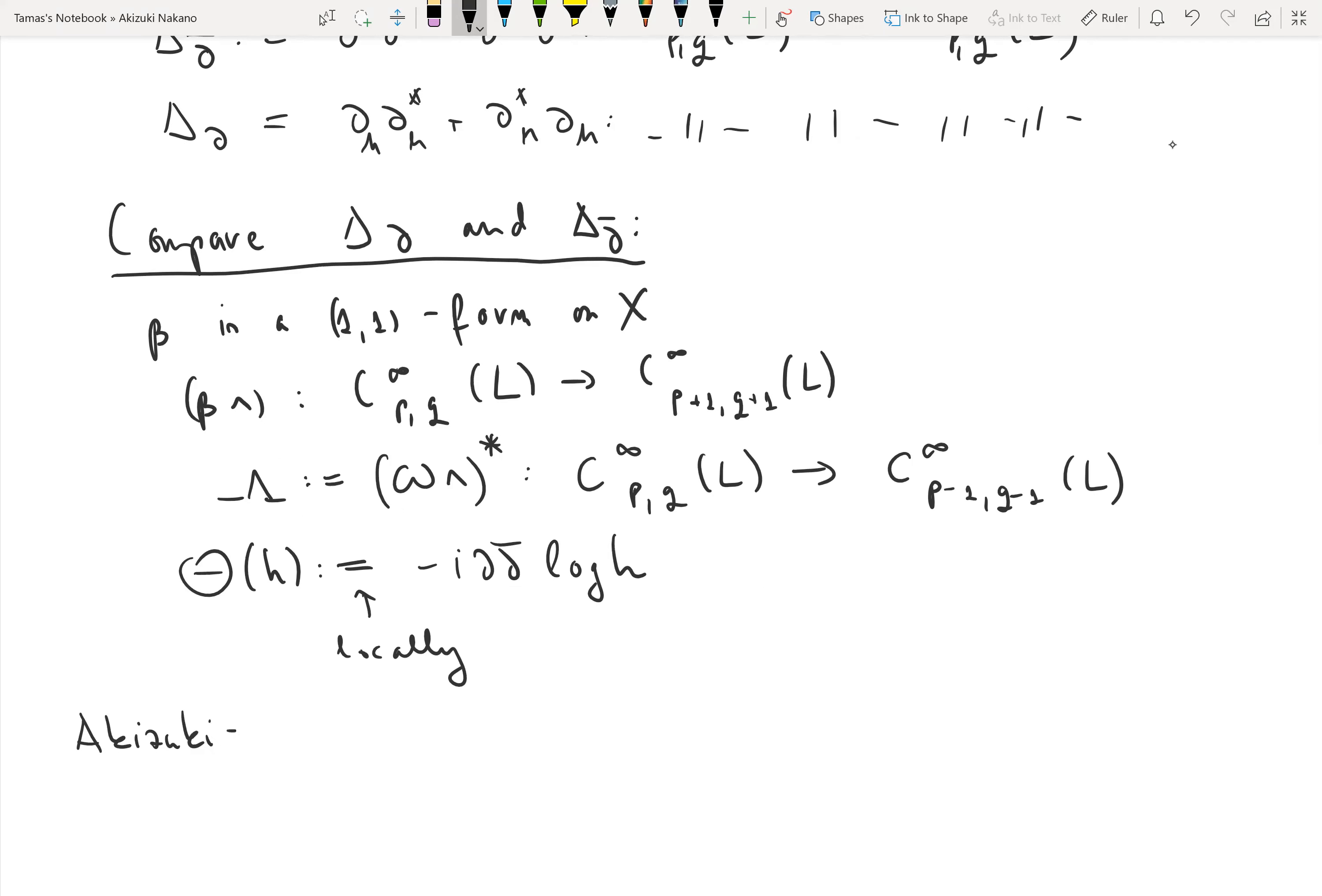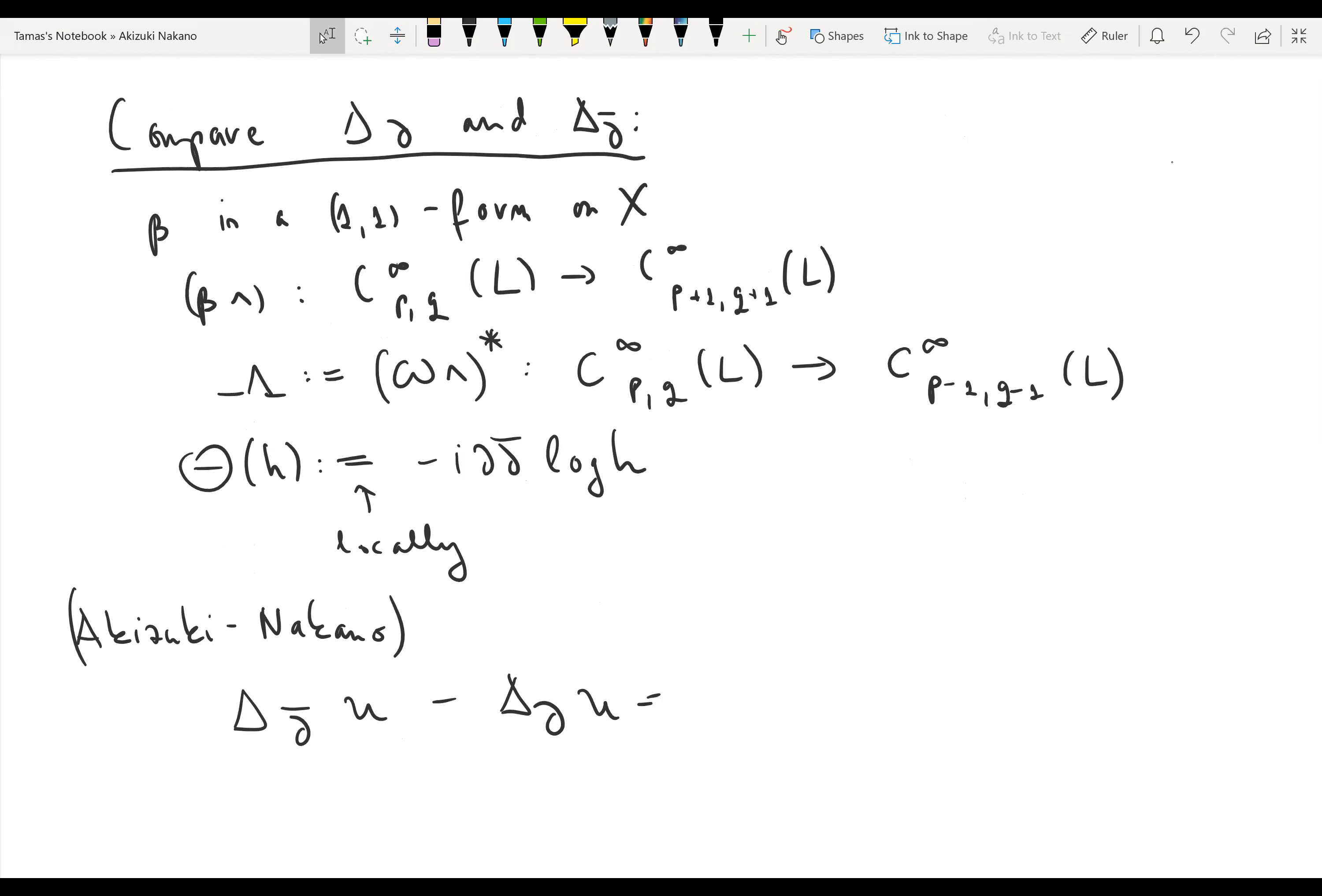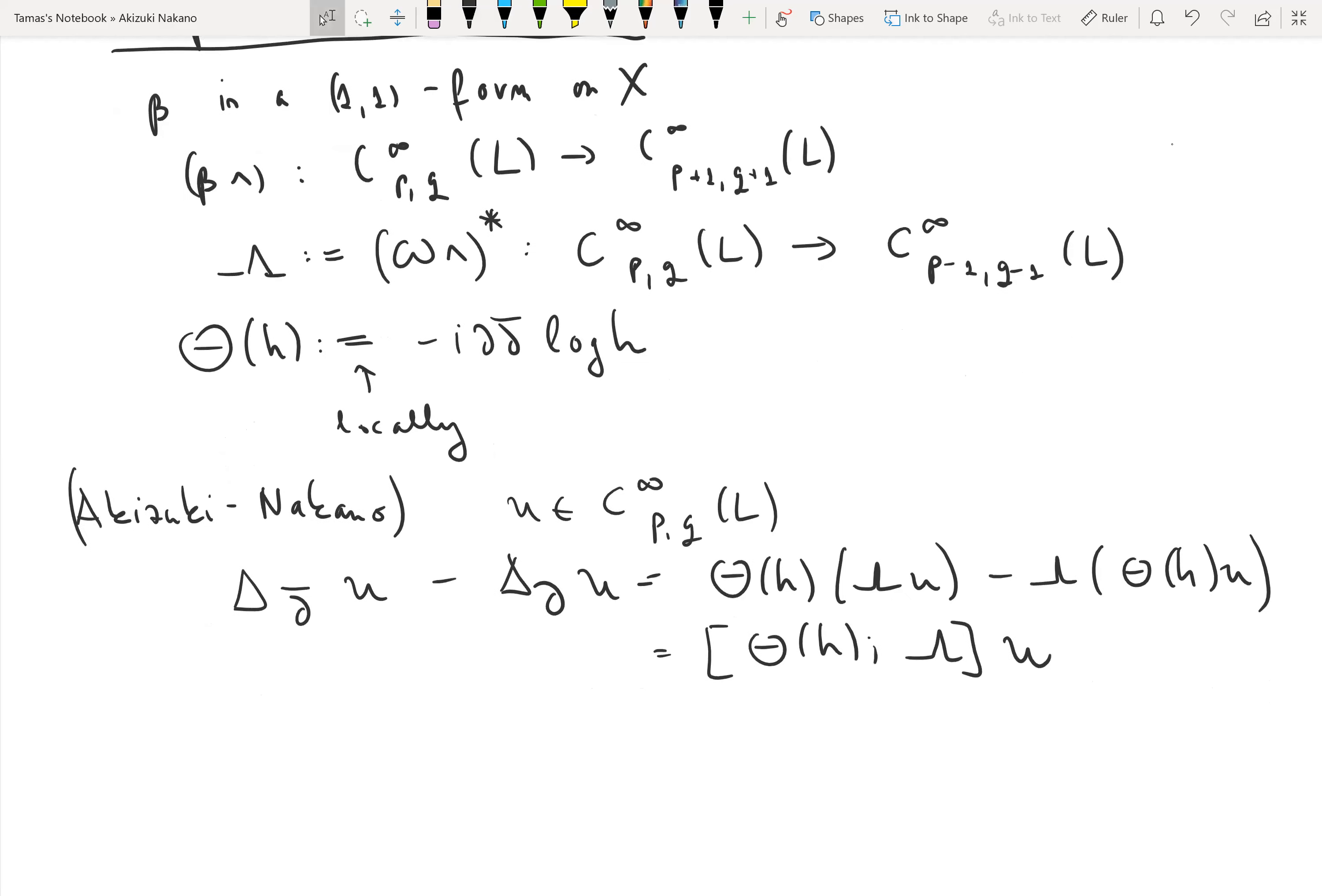The Akizuki-Nakano formula says the following: the difference between the del-bar Laplacian and the del Laplacian for a smooth p,q form on L is nothing but the following commutator. One way to denote this is the commutator of theta_h and lambda.